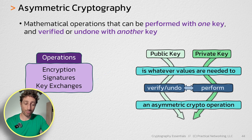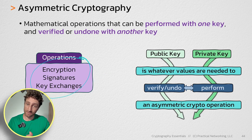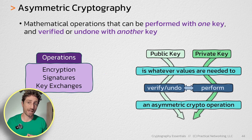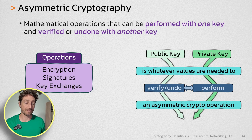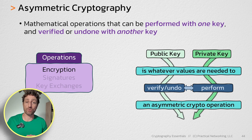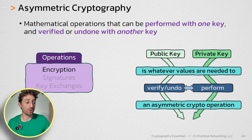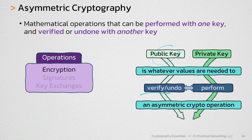We'll be going into more details on each of these in the next few lessons in this series. But for now, I just want to give you a high-level understanding. Let's focus on encryption for a moment. When you encrypt something, you only want the intended party to be able to decrypt it. So it doesn't make sense to do encryption with the private key and undo it with the public key. In the case of asymmetric encryption, the only thing that makes sense is to perform the operation with the public key and undo it with the private key.